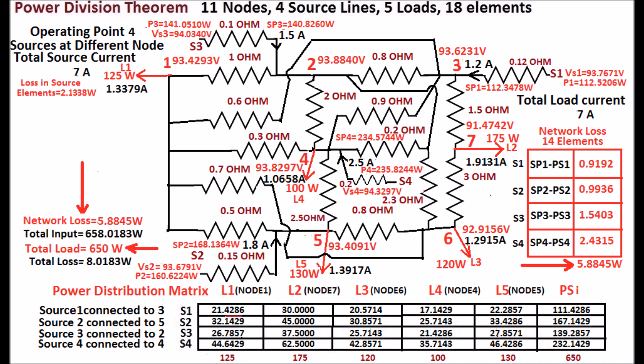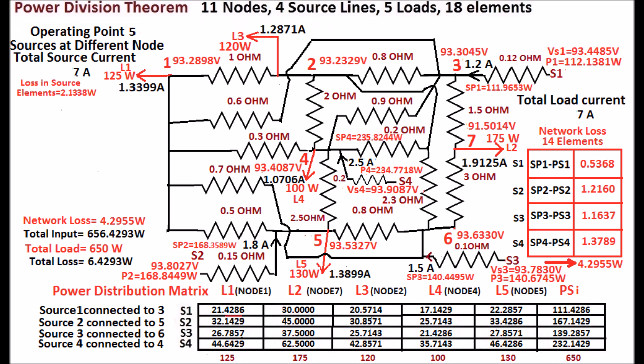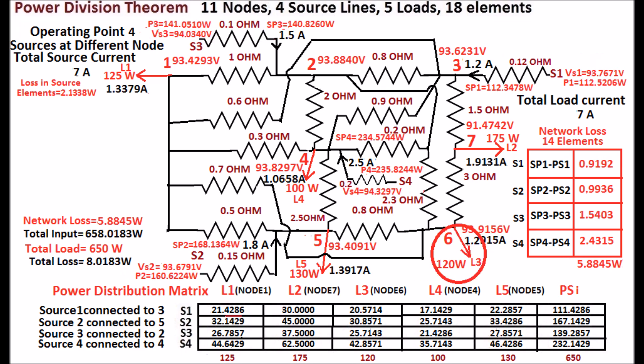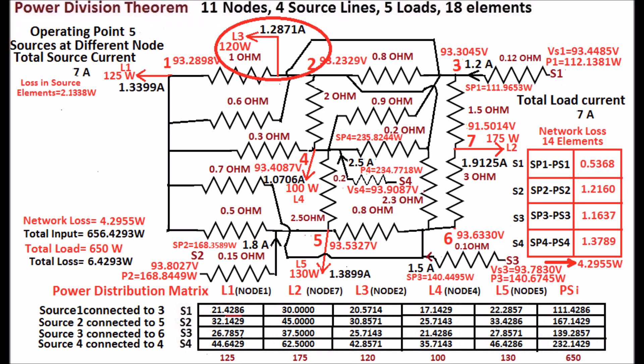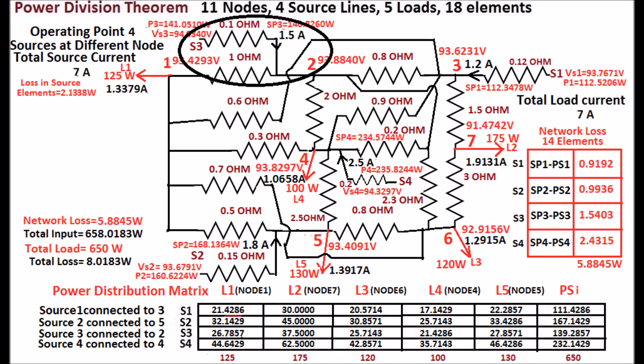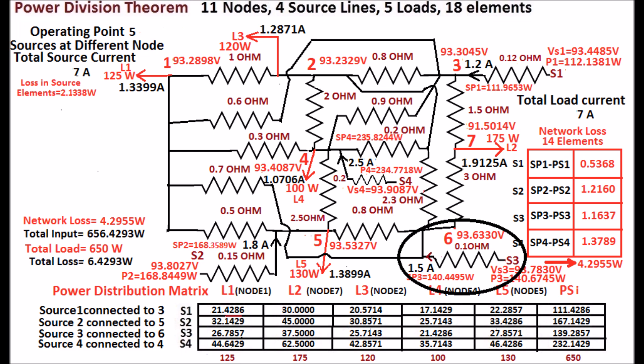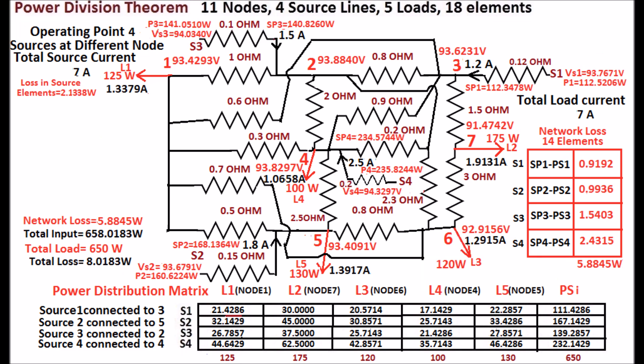See the display of operating point 5. Load 3 at node 6 is shifted to node 2. Source 3 at node 2 is shifted to node 6 as shown in the display, in addition to the previous shifting of location of sources and loads at operating point 4.